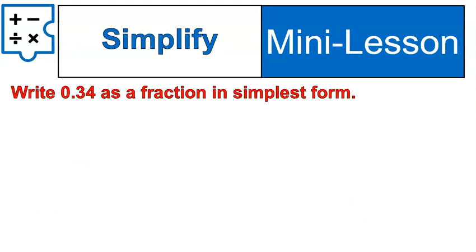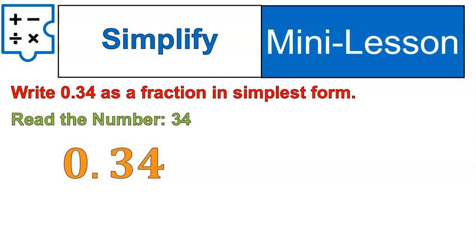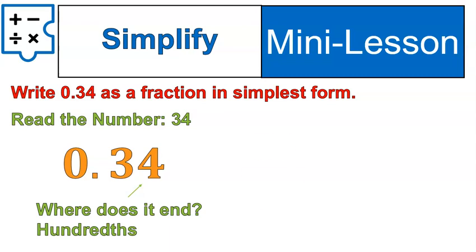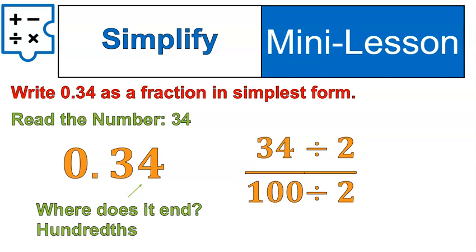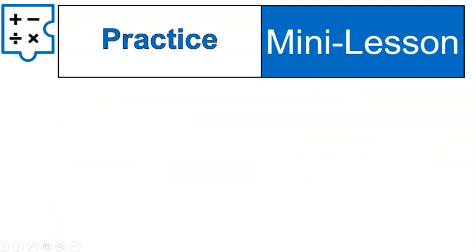So now we're going to practice writing it as a fraction and then simplifying it down. So if we have this number here, 0.34, we'll read the number 34. Look at where it ends in the hundredths column. And so we'll say 34 hundredths. In this video, what I'm going to do is simplify it and just tell you what the greatest common factor is. So the greatest common factor was two. So this fraction simplifies to 17 50ths or 17 over 50.